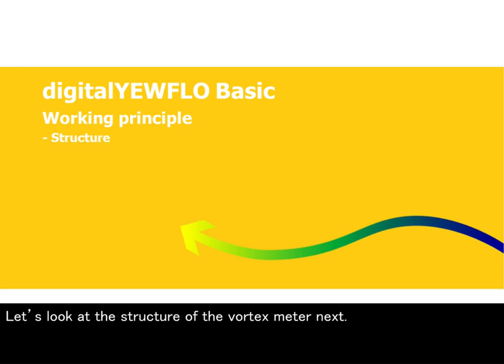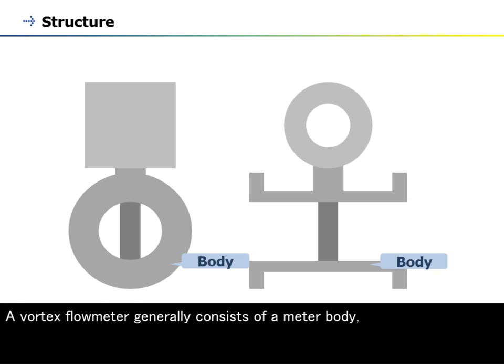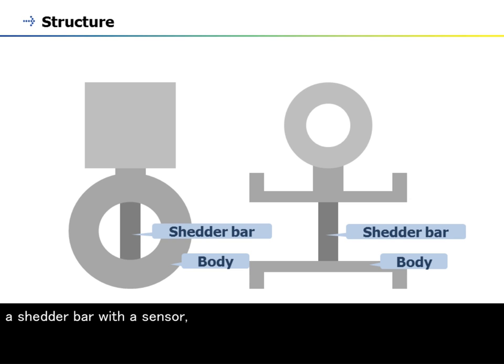Let's look at the structure of the vortex meter next. This cross-sectional view of the vortex meter shows its structure. A vortex flow meter generally consists of a meter body, a shedder bar with a sensor, and converter electronics.